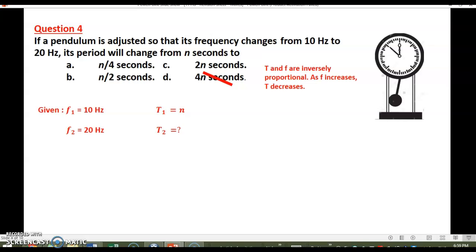So here we have that the frequency increases from 10 hertz to 20 hertz. That's why we expect the period to decrease. So we can eliminate options C and D because 2n and 4n means the period increase. But this doesn't agree with the relation between f and T.